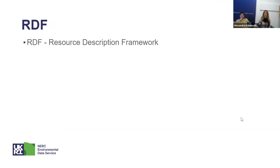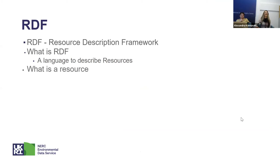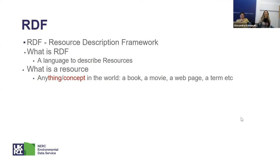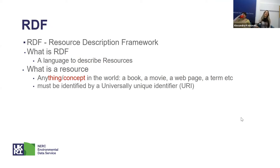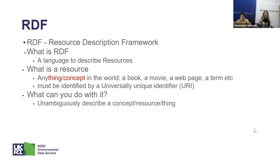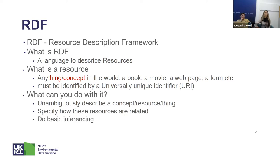RDF stands for the Resource Description Framework and is a language to describe resources. A resource is anything in this world — a book, a movie, a web page, or a term. In RDF, a thing has to be identified by a universally unique identifier, or URI. With this URI you can unambiguously describe a concept, a resource, or a thing. You can specify how your resources can be related with each other and do some basic inferencing.